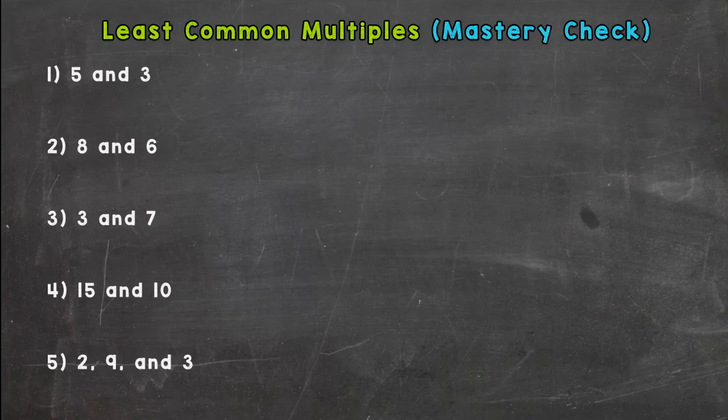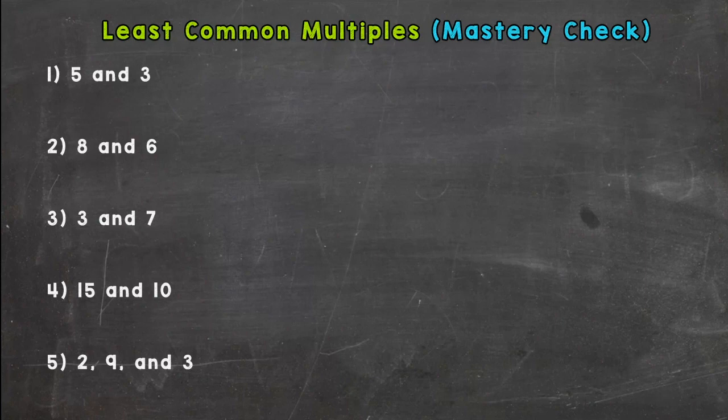If you're ready to start, go ahead and press pause. Alright, welcome back. I'm assuming you have those five done, so let's see how you do. Least common multiple for 5 and 3...